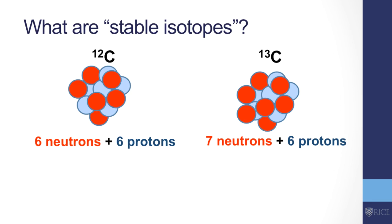Here's C13, which has seven neutrons instead of six. C12 and C13 are considered the stable isotopes because they're not subject to radioactive decay, unlike C14. C14 is not stable, which is why it's useful for age dating. But it's not so abundant, it's difficult to measure, and for CSIA we want to eliminate the effect of radioactive decay when tracking isotope ratios.